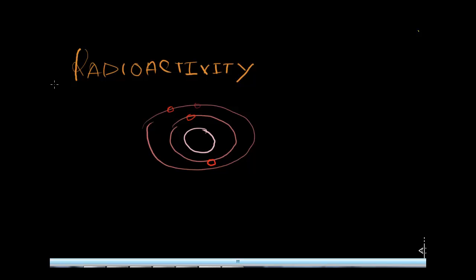And inside the nucleus we have protons and neutrons. The green ones are protons and we also have neutrons which are neutral. The blue ones are neutral neutrons and the green ones are protons which are positively charged.